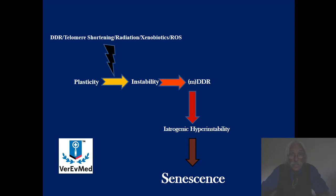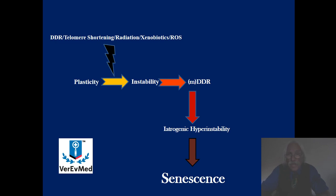What that leads to in this negative paradigm is what I call iatrogenic hyper-instability. Iatrogenic just means it's caused by the therapy — the treatment here being DDR, DNA damage repair. I'm calling it hyper-instability because it's not just an unstable system; it's an extremely unstable system because you're constantly introducing the opportunity to make more mutations. Ultimately, this model — which causes aging, or cellular senescence — shows that iatrogenic hyper-instability leads to senescence.